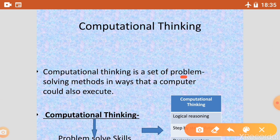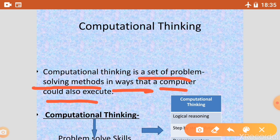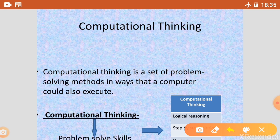So let's discuss the definition of computational thinking. The definition of computational thinking is a set of problem-solving methods. It is a set of problem-solving methods in the way that a computer could also execute. It solves our problem in the way a computer could also execute.